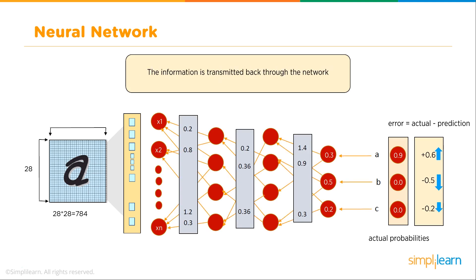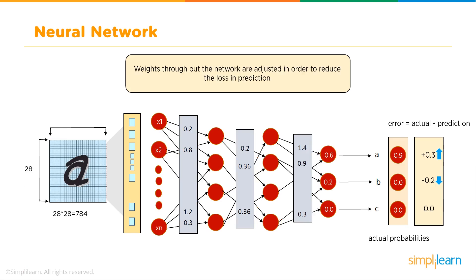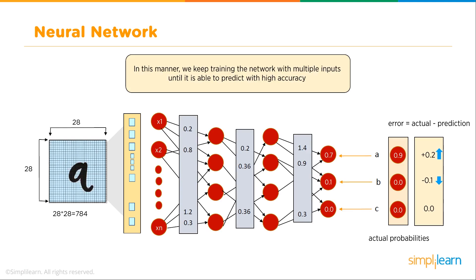Weights throughout the network are adjusted in order to reduce the loss in prediction. Here comes our error: 0.6, minus 0.5, minus 0.2. That comes up and adjusts our 1.4, 0.9, all our multipliers. In this manner, we keep training the network with multiple inputs until it is able to predict with a high accuracy.